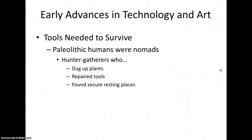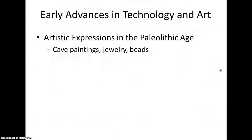Cro-Magnans had more than 100 specialized tools, including bone needles in order to sew. Early modern humans also created art — cave paintings, animal sculptures, rock engravings, and other paintings. They had jewelry made of seashells, lion teeth, and bear claws, as well as polished beads from mammoth tusks.